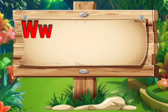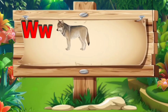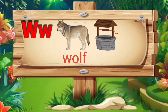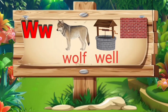W. W for wolf: W, O, L, F — wolf. W for well: W, E, double L — well. W for wall: W, A, double L — wall.